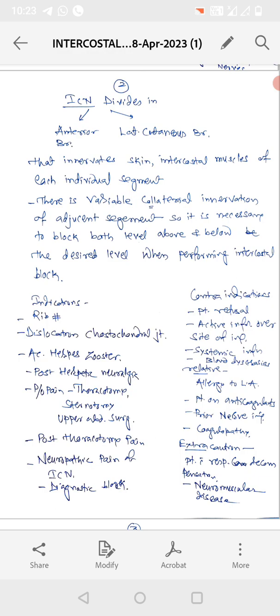There is variable collateral innervation of adjacent muscles and segment. So it is necessary to block both level above and below the desired level when performing intercostal nerve block.